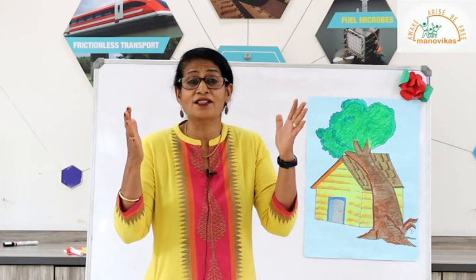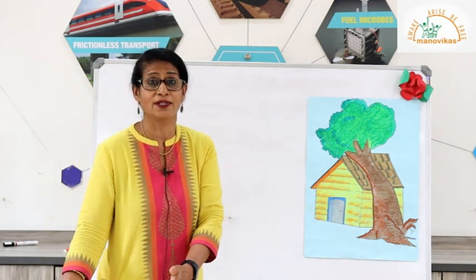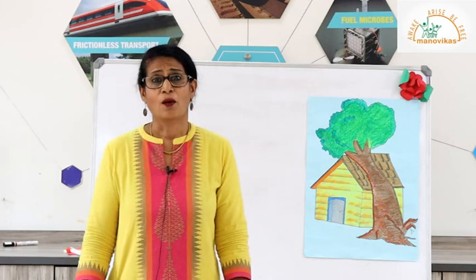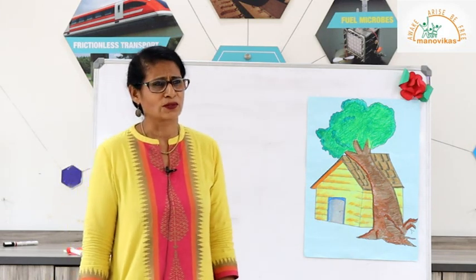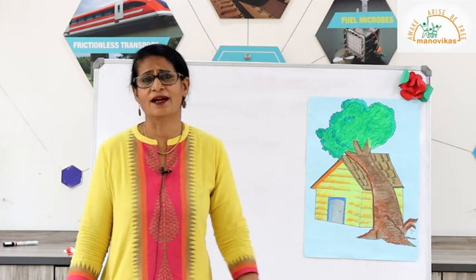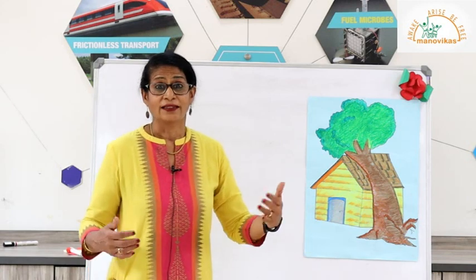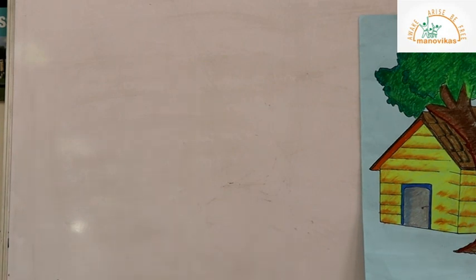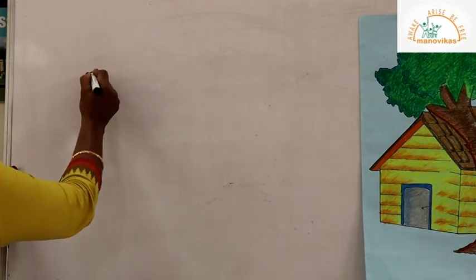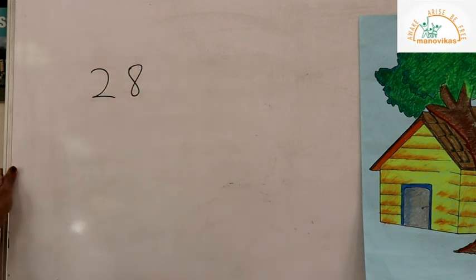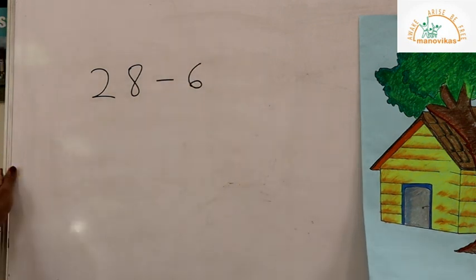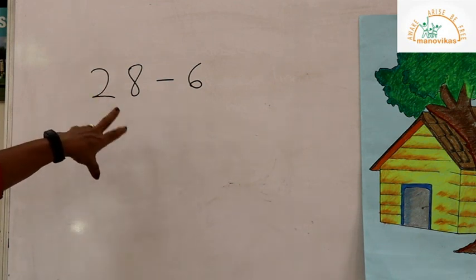I saw that six of my trees were on the ground, uprooted, and I was wondering what I will do now. The total number of trees in my garden was 28 — now how many are left? Let's find out how many trees from the 28 remain in my garden. The number of trees I had was 28 and the number that fell down was 6.